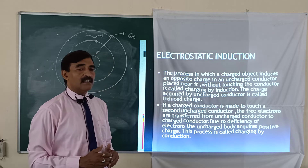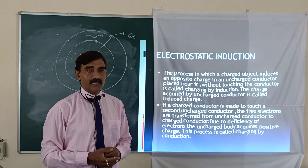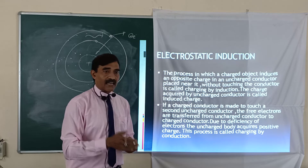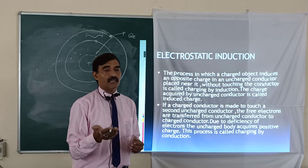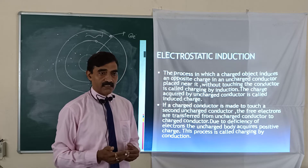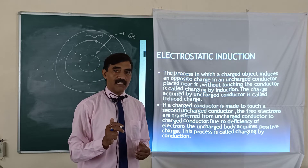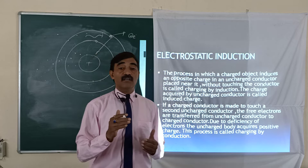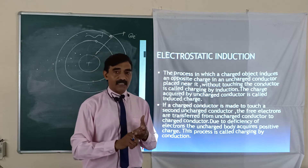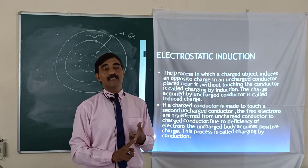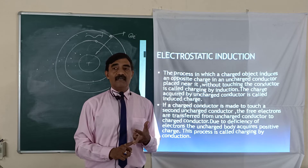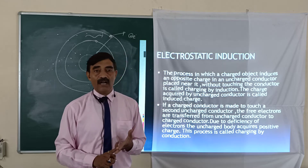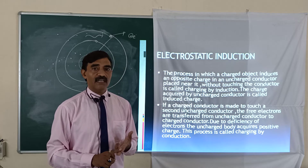In conduction, a charged body is placed in contact with the uncharged body. Free electrons from the uncharged body transfer to the charged body if it is positively charged, and free electrons move from the charged body to the uncharged body if it is negatively charged. In conduction, the uncharged body acquires the same charge as the charged body. In induction, the uncharged body acquires the opposite charge. In conduction there is contact; in induction the bodies are only placed near each other.